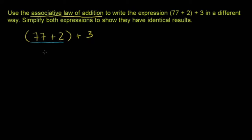Well, 77 plus 2, that's 79. So everything in the parentheses just evaluates to 79. And then you still have that plus 3. And 79 plus 3 is 82. So this is equal to 82. That's if you just evaluated the way that they gave it to us.